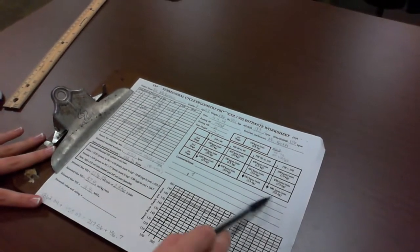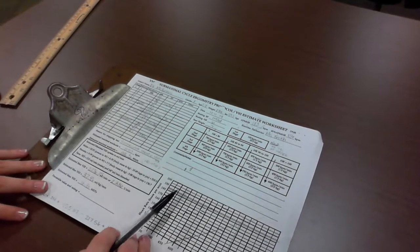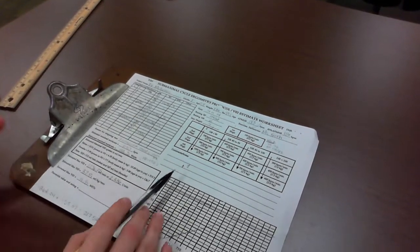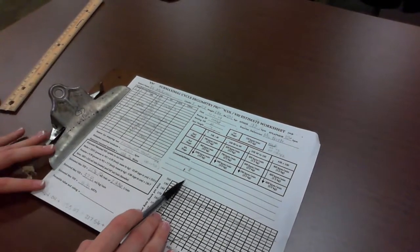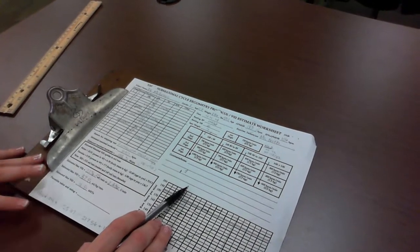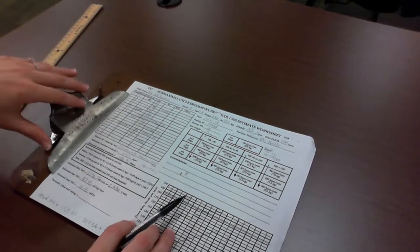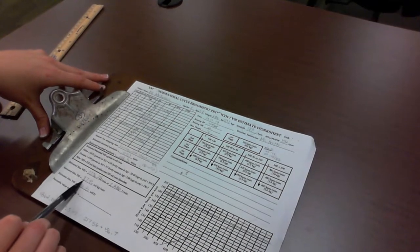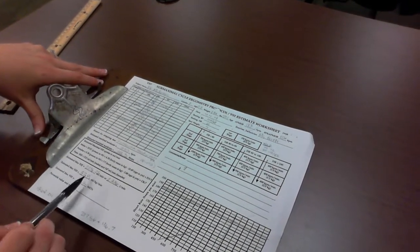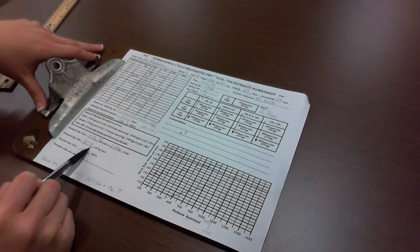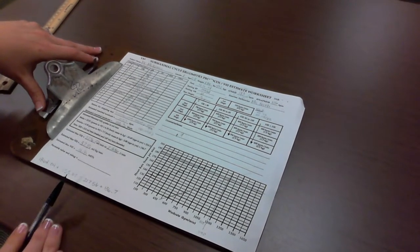So we need to write that in either the comment section or on the back of this paper, so that we have documented why this submax test was a valid test. And we can give this to the client so they know this is an accurate prediction of their max VO2. We didn't necessarily have to do a maximal test because we can predict it using this equation.